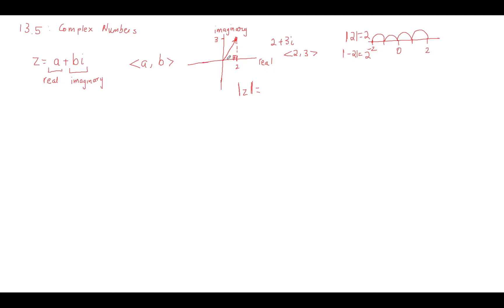The formula ends up being the same whichever way you think about it. You take the square root of the two components squared: square root of a² plus b², and you get the absolute value of a complex number. So for example, the absolute value of 2 plus 3i is the length of the hypotenuse, which is the square root of 4 plus 9, which is the square root of 13.